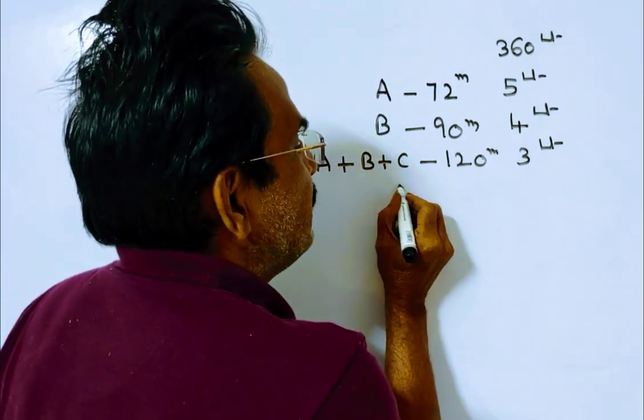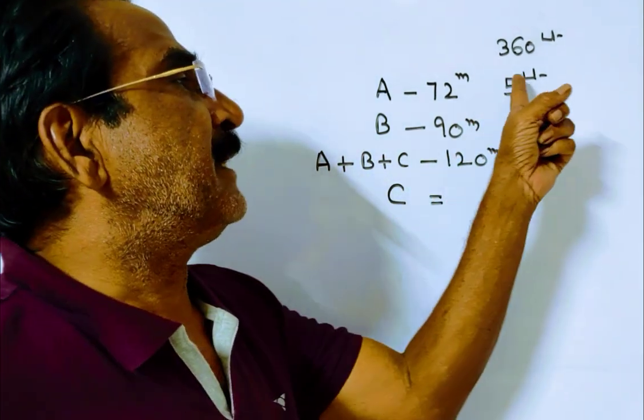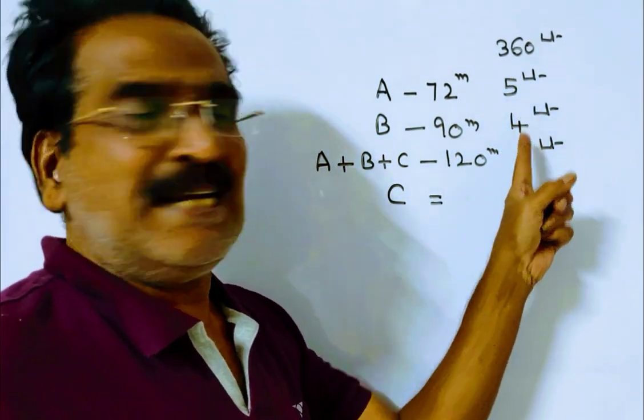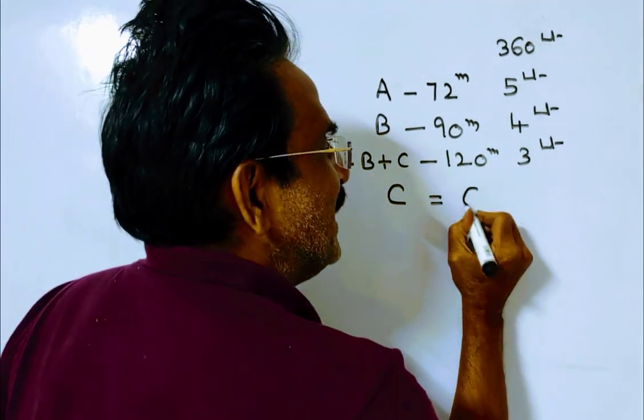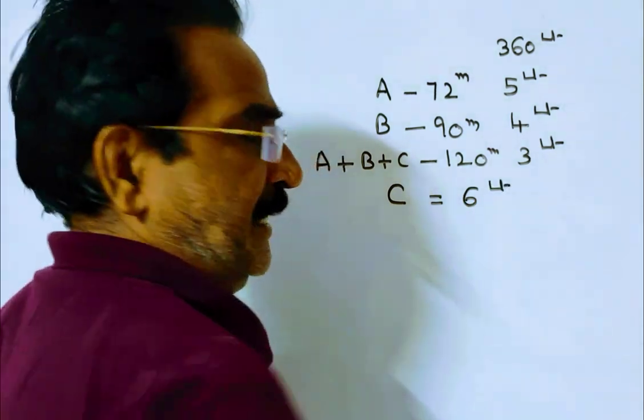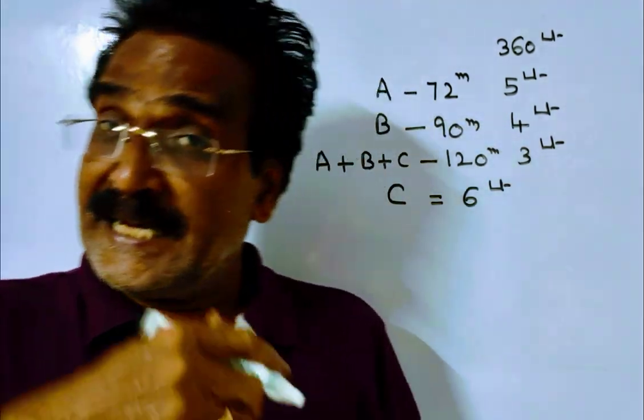Now pipe C can empty 5 plus 4 equals 9, minus 3 equals 6 liters of water per minute.